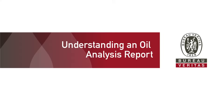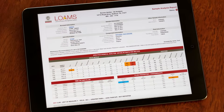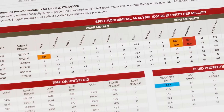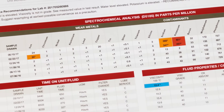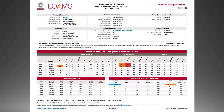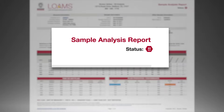The Bureau Veritas Oil Analysis Report presents your data so that it's fast and easy to find the information you're looking for. Here's how the report is organized. The severity level of the sample's overall results is located at the top of the report to the right.